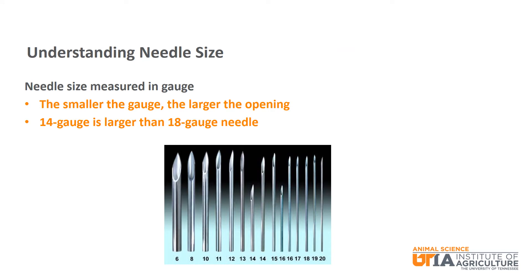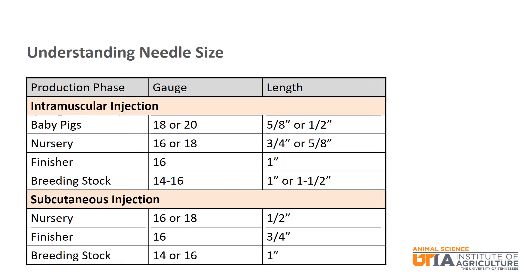Needles come in all sizes. The size of a needle opening is measured by gauge — the smaller the gauge number, the larger the needle opening. For example, a 14 gauge needle is much larger than an 18 gauge needle. 18 to 20 gauge needles should be used with baby pigs, with needle size increasing as pigs mature, up to 16 gauge for finishing pigs and breeding stock. Longer needles are used for intramuscular injections compared to subcutaneous — up to one and a half inch for IM in breeding stock, while one inch needles are used for subcutaneous injections in the same animals.